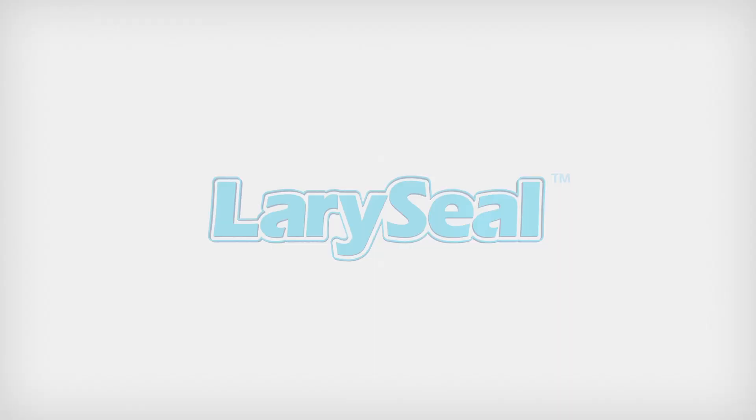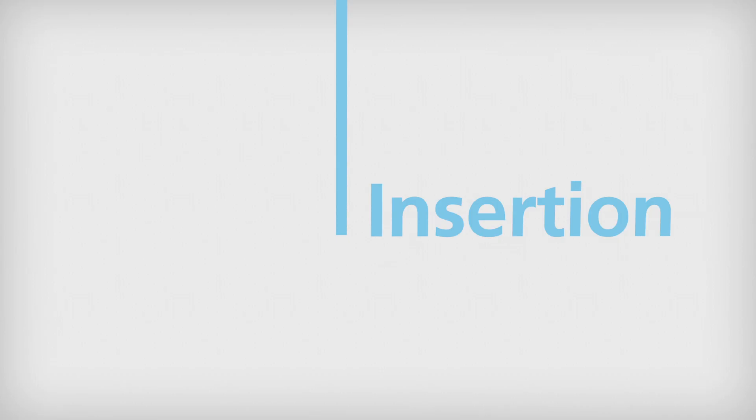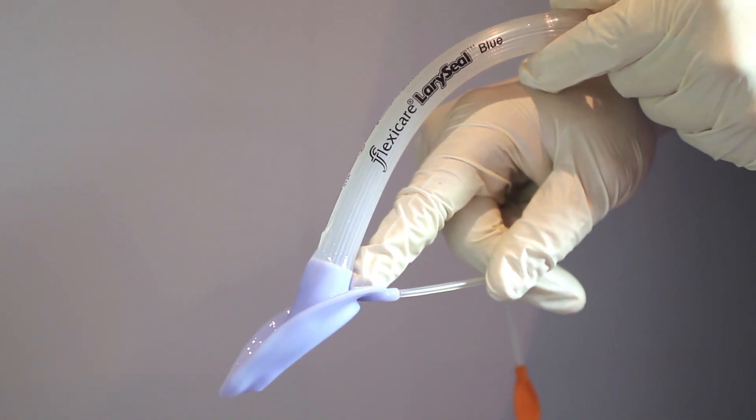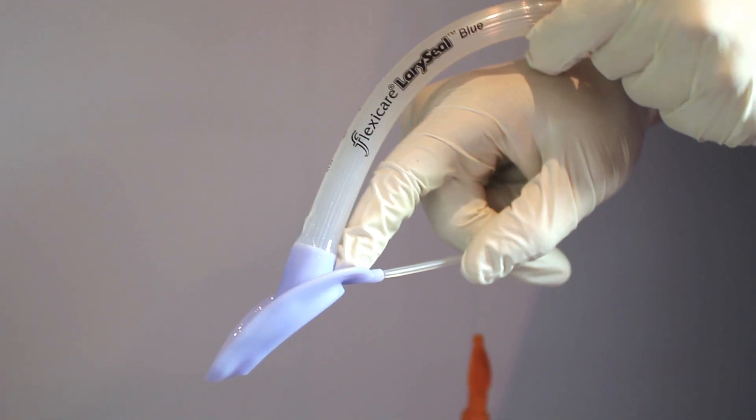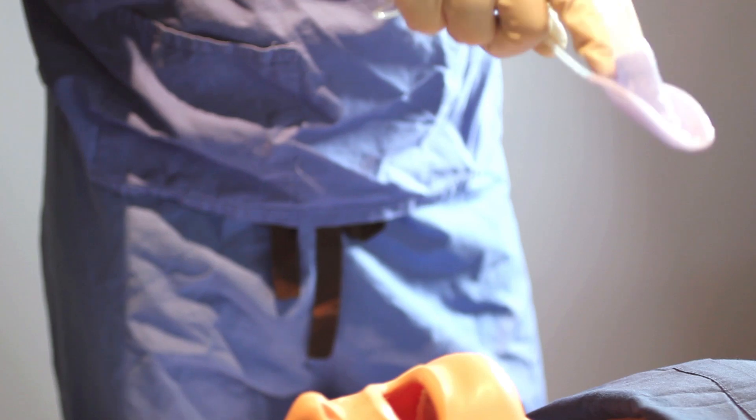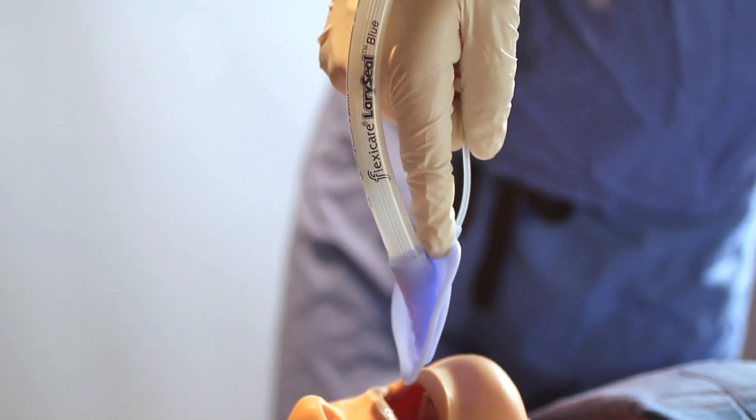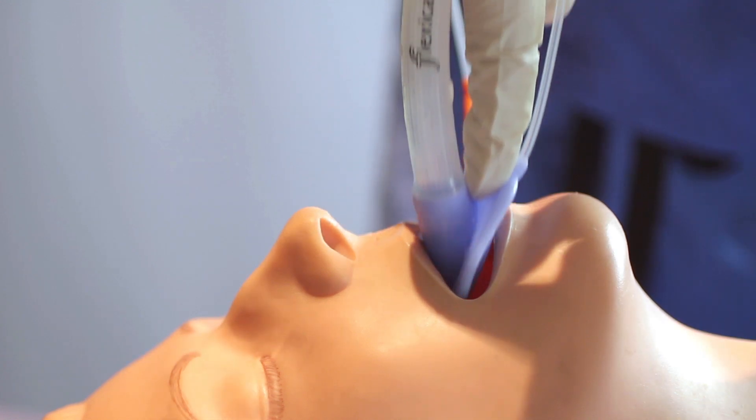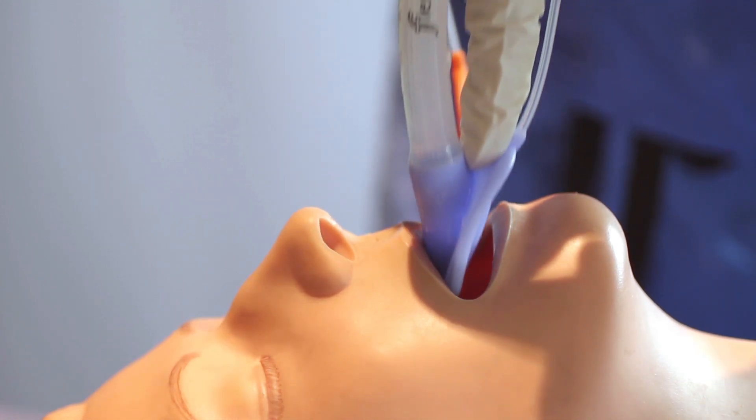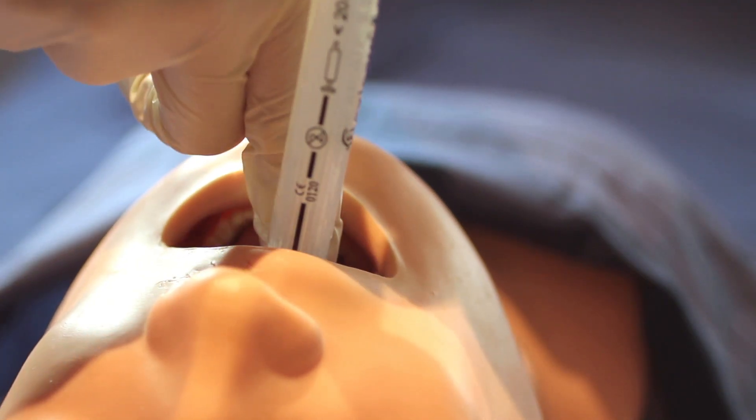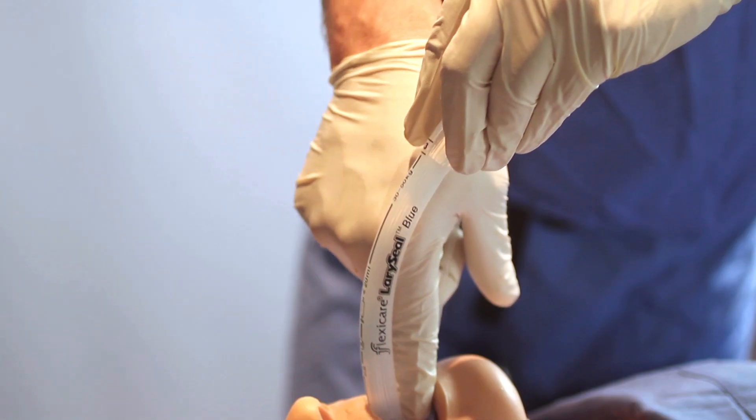Place your index finger behind the patient cuff between the juncture of the inflation line and the main tube and grasp the Laracel Blue securely. Place the tip of the Laracel Blue patient cuff just behind the patient's upper teeth against the hard palate. Massage some of the lubricating gel contained on the back of the patient cuff against the hard palate before advancing the Laracel Blue with a definitive force into the patient's airway.